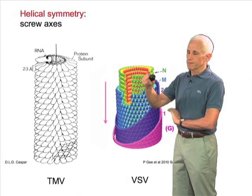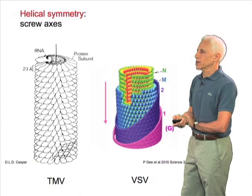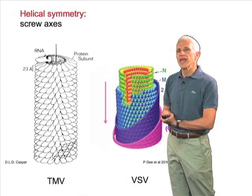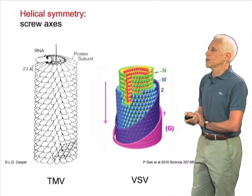Some viruses have helical symmetry. Helical symmetry is represented by a screw axis, and so tobacco mosaic virus, which was studied historically as one of the very first viruses for which detailed biochemistry and detailed structure became available...